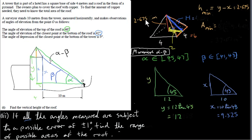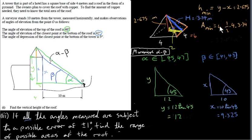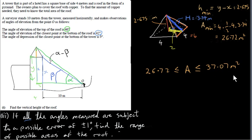Using the minimum height, we apply Pythagoras to get the perpendicular slant height of a triangular face: H = √(2.675² + 2²) = 3.34 meters. The minimum area of one triangle is ½ × 4 × 3.34, and multiplying by four gives the minimum total area. Therefore the range of possible areas is: A_min = 26.72 m² to A_max = 37.07 m².